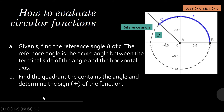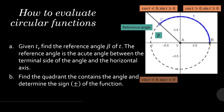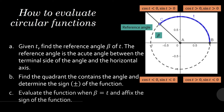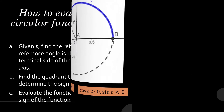In the first quadrant, the x-coordinates and y-coordinates are greater than zero, so cosine is positive and sine is positive. In the second quadrant, cosine is negative and sine is positive. In the third quadrant, cosine is negative and sine is negative. In the fourth quadrant, cosine is positive and sine is negative. Knowing the reference angle and the sign of your function, we evaluate the function when T equals the reference angle and then affix the sign.